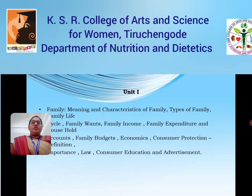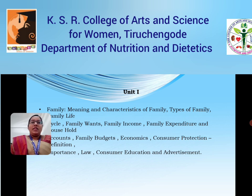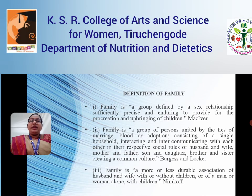Unit 1 of General Home Science comprises the meaning and characteristics of family, types of family, family cycle, expenditure and income, accounts, budgets, economics, consumer protection, definition, importance, law, consumer education and advertisement. How do we define a family?